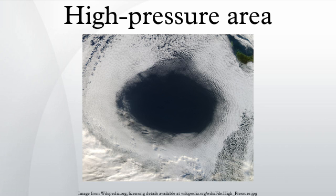However, because the planet is rotating underneath the atmosphere, and frictional forces arise as the planetary surface drags some atmosphere with it, the airflow from center to periphery is not direct, but is twisted due to the Coriolis effect — the apparent force that arises when the observer is in a rotating frame of reference. Viewed from above, this twist in wind direction is in the same direction as the rotation of the planet.